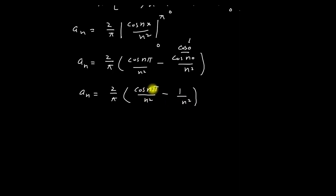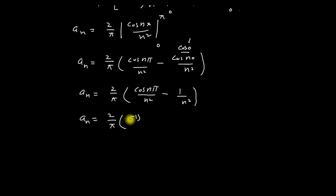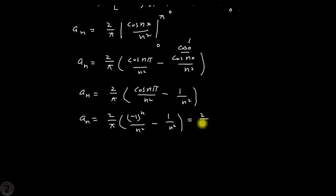So this can be written as: aₙ = (2/π) × [(−1)ⁿ/n² − 1/n²]. Taking 1/n² as common, we get: aₙ = (2/π n²) × ((−1)ⁿ − 1).